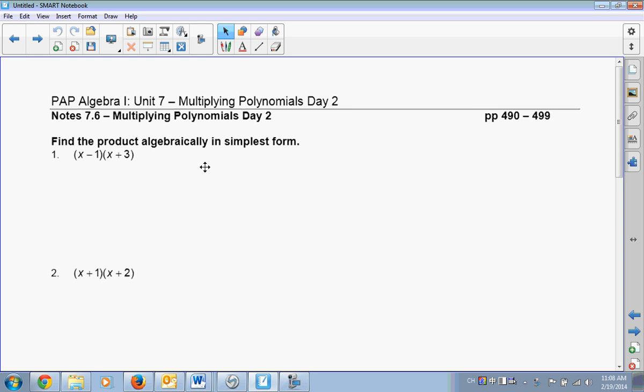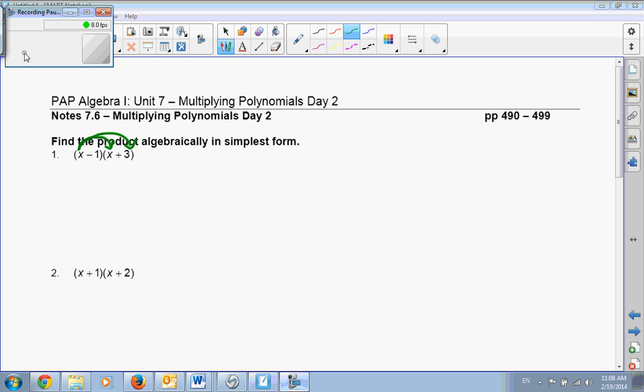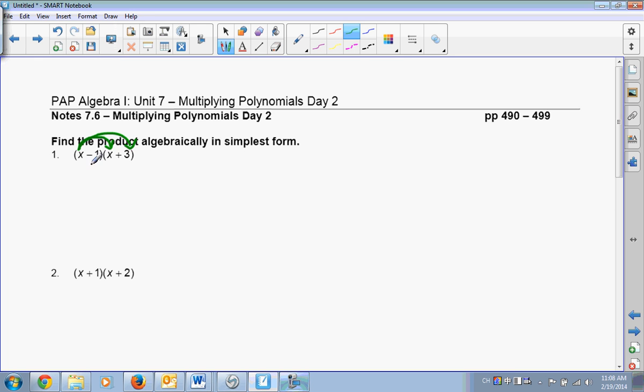We're going to do the same thing we did yesterday, we're distributing, but today I'm going to call it double distributing, because not only are we multiplying the x into these two terms, we're also multiplying the negative 1. Okay, so let's just start with our first term of x. We're taking the x, and we're multiplying it times the x and the 3 in the other binomial. We're ignoring the negative 1 right now, because this is two different terms.